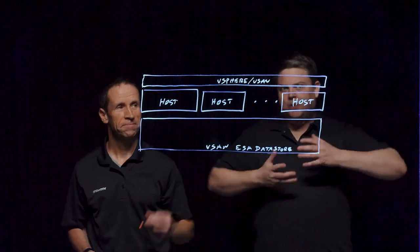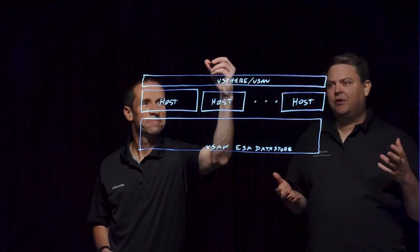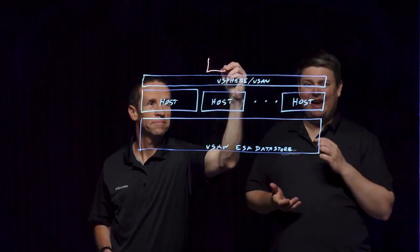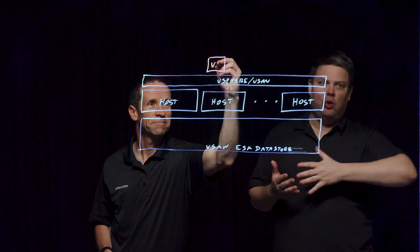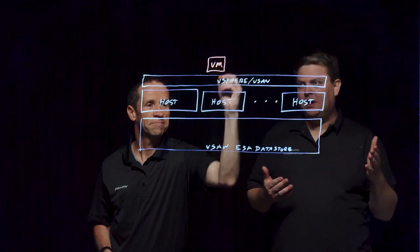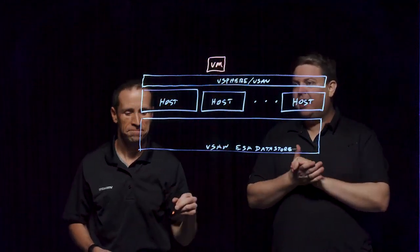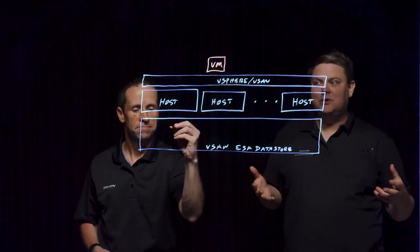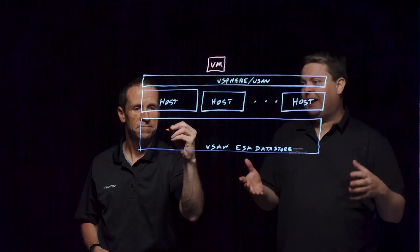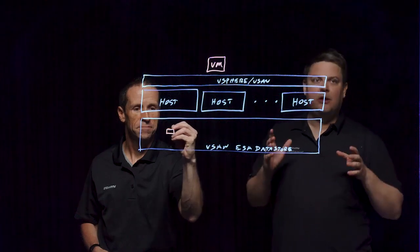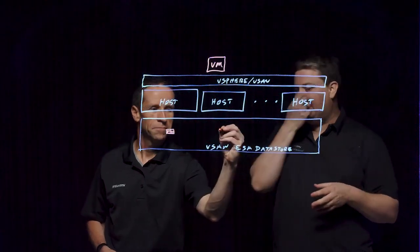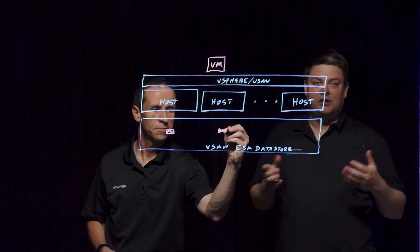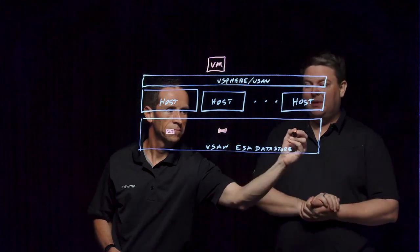Snapshots are very useful for virtual machines. They can provide a point in time to roll back to. While they are not a backup in and of themselves, they are often used for the creation of backups to create a fixed point from which to copy that data out using our various storage and backup APIs.